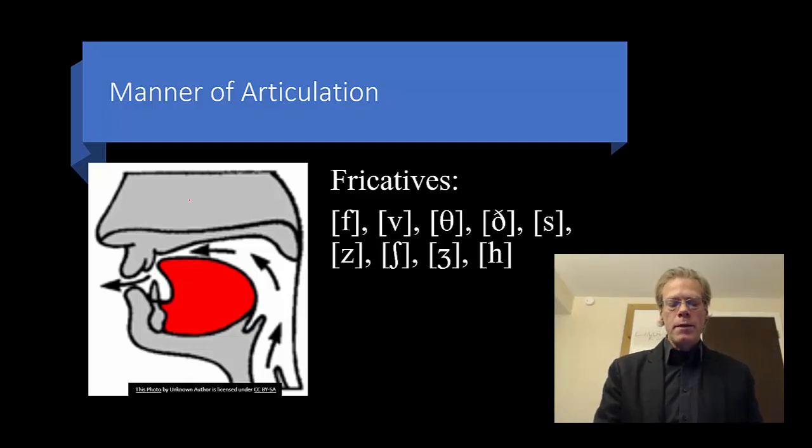So those fricatives are going to be th, v, th, v, the, s, z, sh, zh, and h. This is called an esh. This is called an ezh.